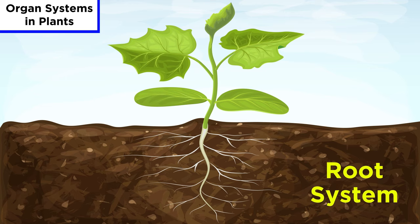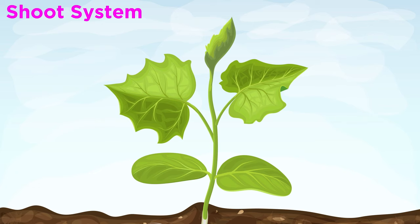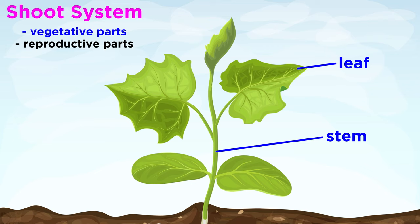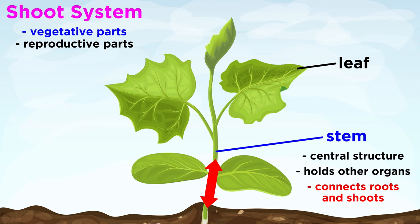So that covers the root system, which is the underground portion of a plant. The other portion is the above-ground organ system, or the shoot system. The shoot system includes the vegetative or structural parts of the plant, and also the reproductive parts of the plant. The vegetative parts of a plant include organs like the stem and leaves. The stem provides central structure for a plant, holds all of the other above-ground organs, and serves as a connection between the root and shoot systems, allowing nutrients to flow up and down through its xylem and phloem tissues.